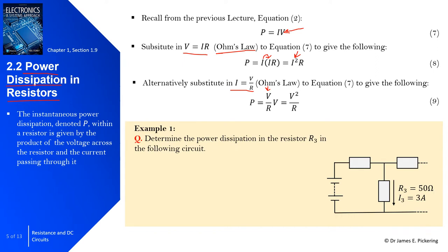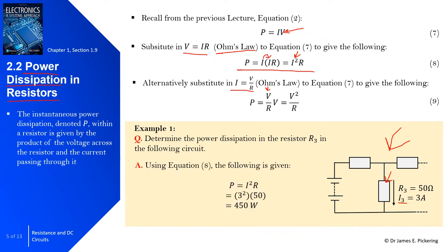As an example, consider a circuit with a DC power source and three resistors. We want to determine the power dissipation in resistor R3, which has a resistance of 50 ohms and a current of 3 amps passing through it. Using P = I²R: substituting 3 squared multiplied by 50 gives a power dissipation of 450 watts.